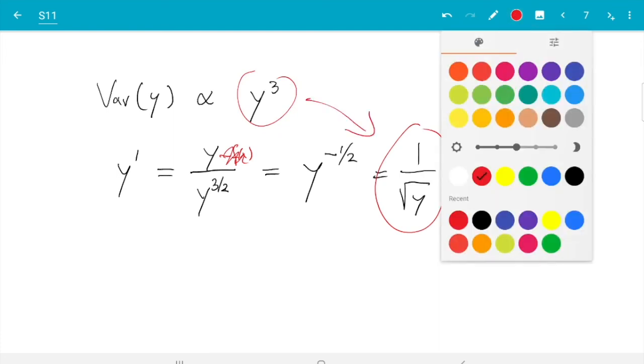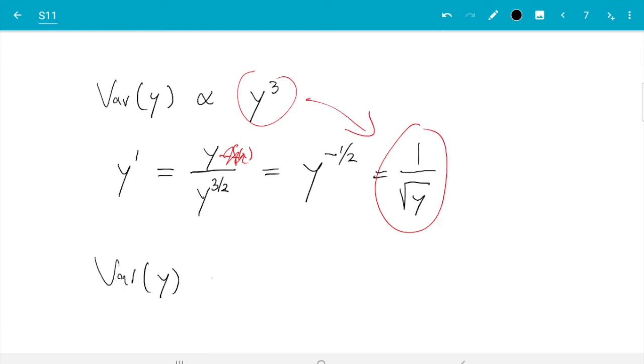Let's do another case. Variance of y if it's proportional to y. So the standard deviation is square root of y. Then we can still do it. We can do y prime is y over square root of y is just square root of y, is okay. So that's something we can try.